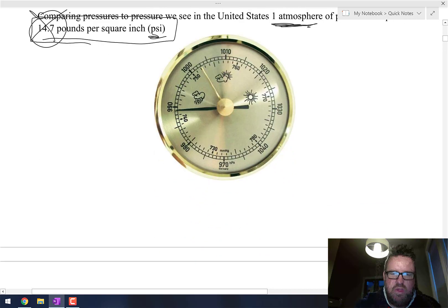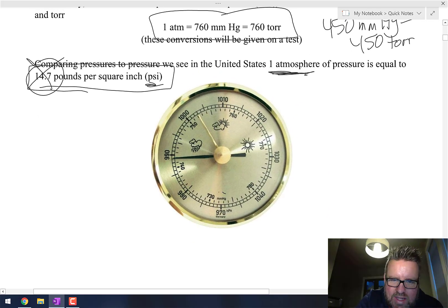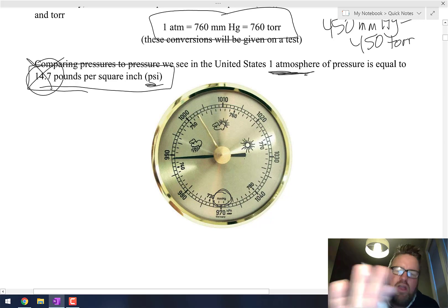When you know one of them, you've got to be able to convert to the other two. Here's an example of a barometer right here. On the inside you can see those millimeters of mercury—that's how they're measuring. Another form of measuring is HPA—the PA stands for what's called a Pascal, which you may learn about someday.